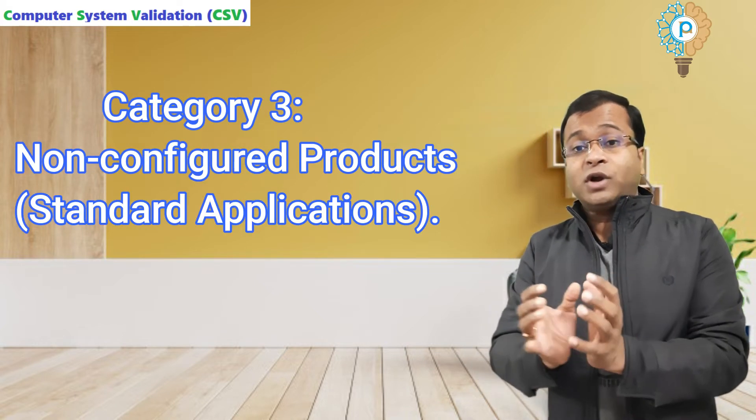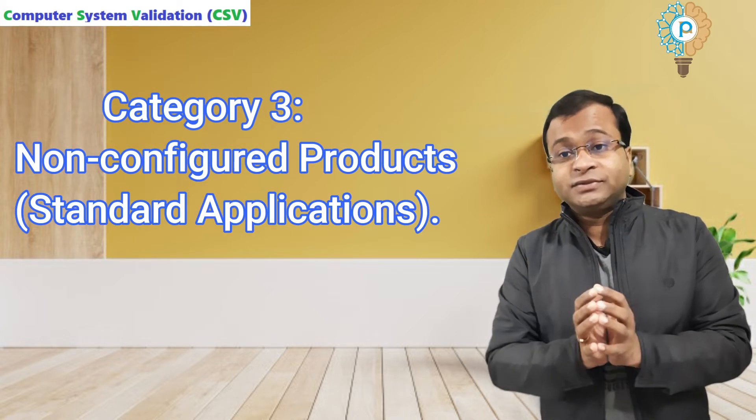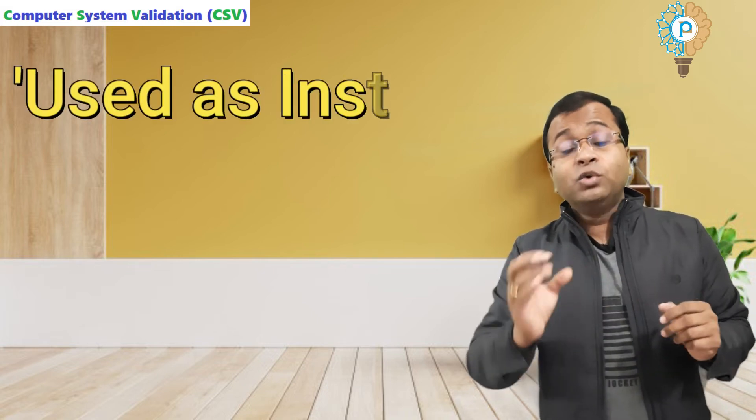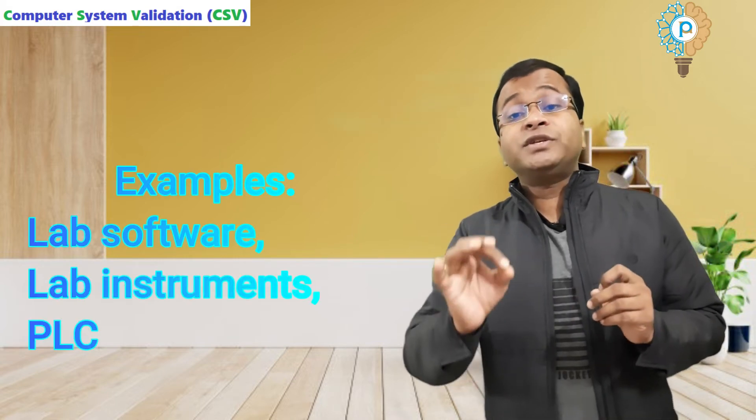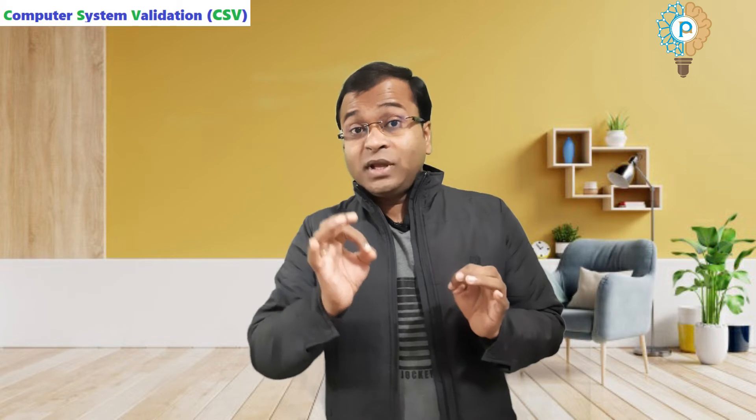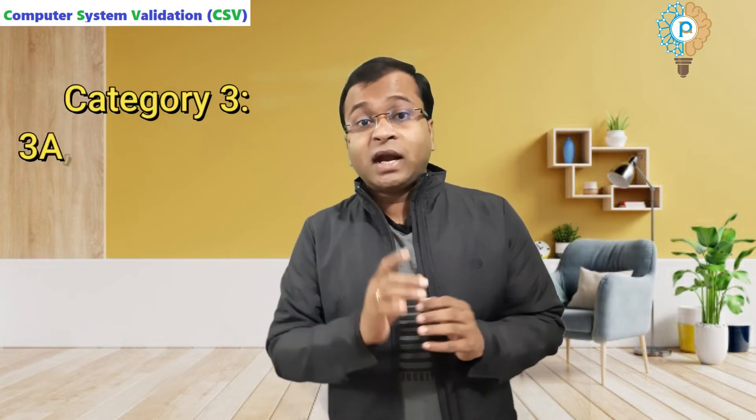Category 3 is the non-configured product or standard applications. This category includes software which can meet the requirements of the business process without modifications or used as installed, as well as configurable software that is used only with its default settings. Examples include lab software, programmable logic controls. Category 3 software has five subcategories: 3A, 3B, 3C, 3D, and 3E.